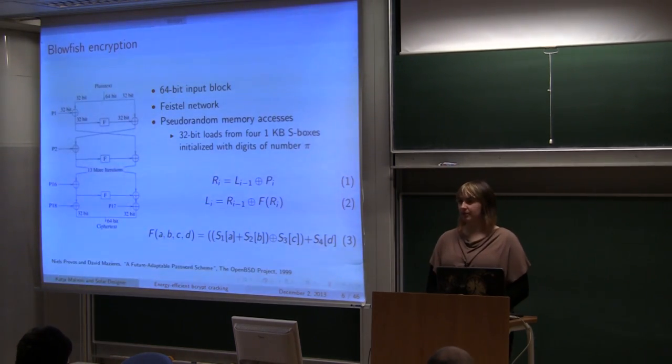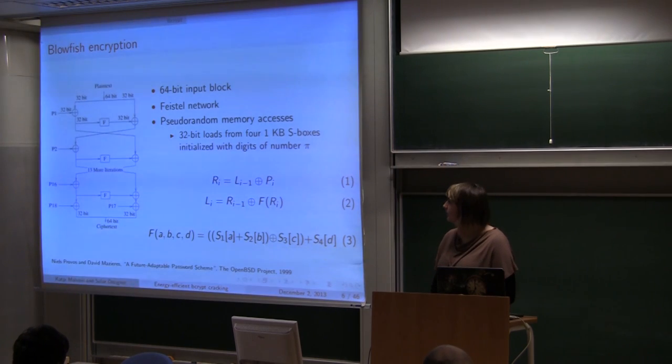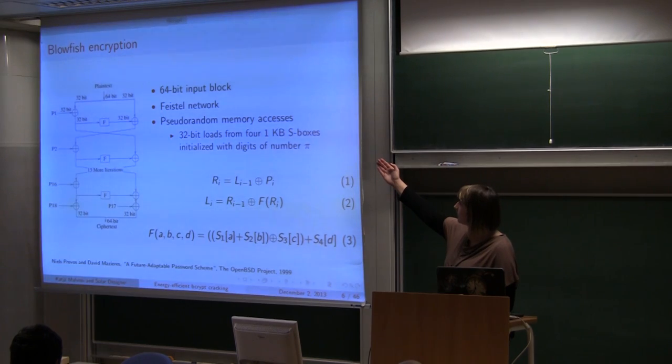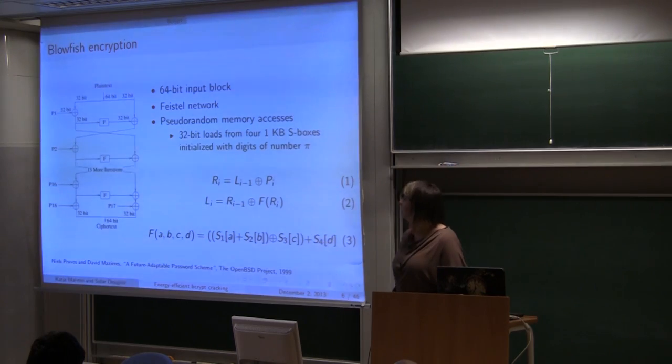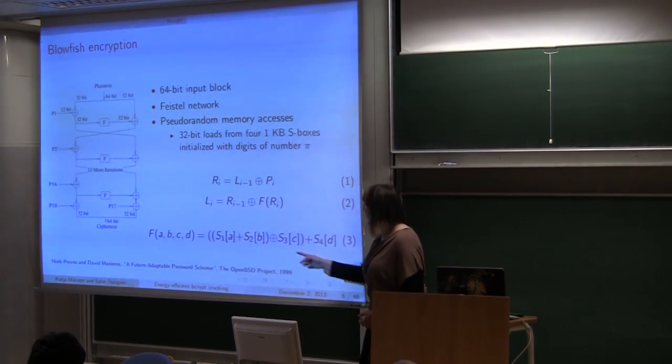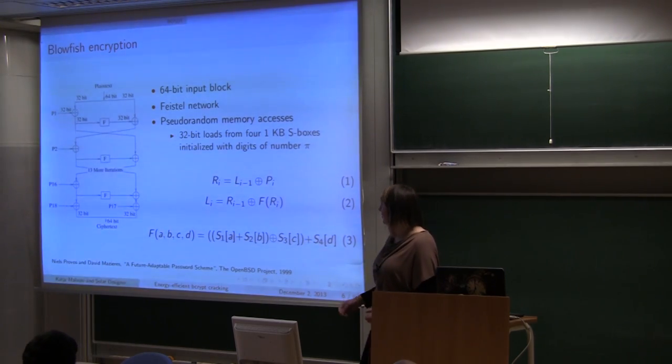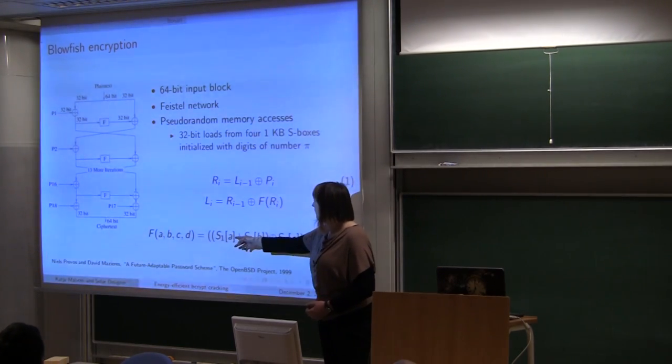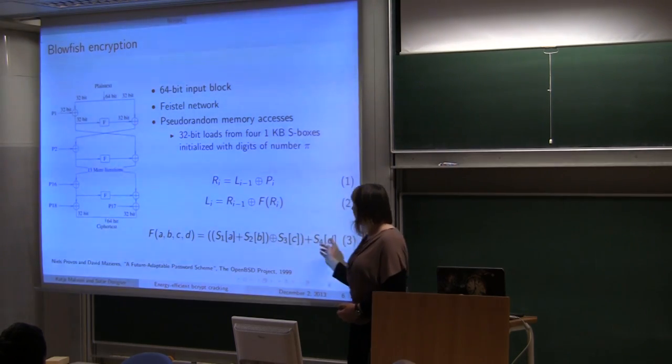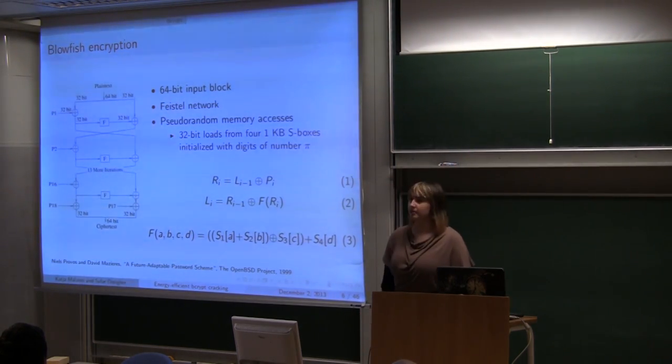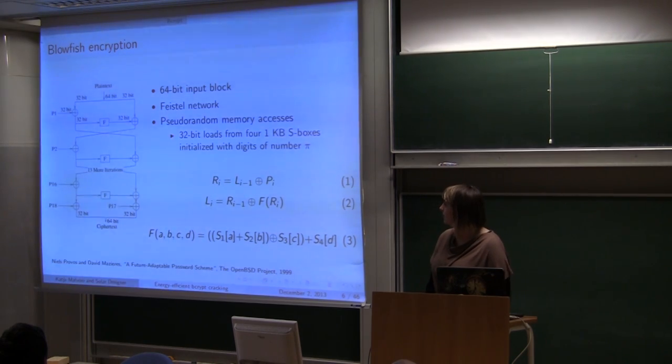Blowfish encryption consists, it actually has 64-bit input blocks with the Feistel network, which works like this. This F-function loads data from S-Boxes. A, B, C, and D are different, are 4 bytes of L, with A being the most significant one. And this pseudo-randomness comes to the point when 32-bit loads from S-Boxes.